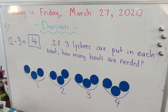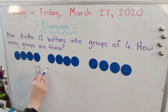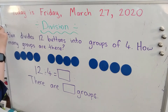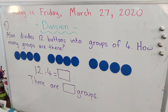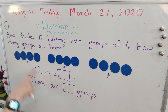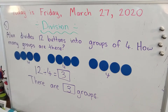Let's go ahead and turn to the next page. Number one. It says Alex divides 12 buttons into groups of four. How many groups are there? So here we have 12 buttons, and they are each in groups of four — there's four here, four here, and four here. So 12, again we start with the total. 12 buttons divided by groups of four equals how many groups? One, two, three. There are three groups of buttons.